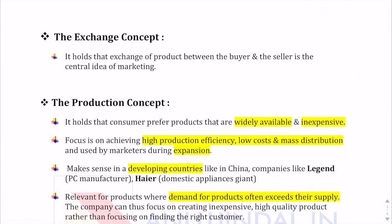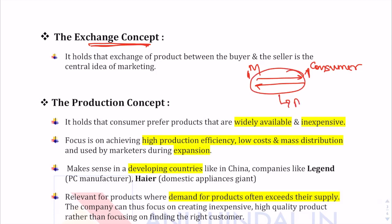The first concept is the exchange concept. It is very simple and basic. It holds that the exchange of a product between the buyer and seller is the central idea of marketing. Under the features of marketing, the first feature is that exchange is the basic essence of marketing. This concept holds that there are two parties — the marketer and the consumer — and there is an exchange transaction going on between these two parties, which is what marketing is all about.